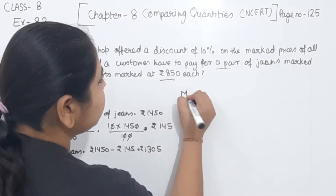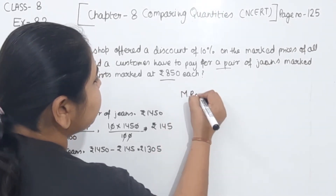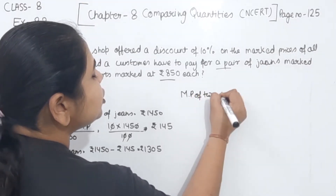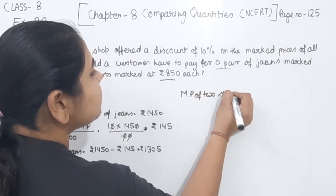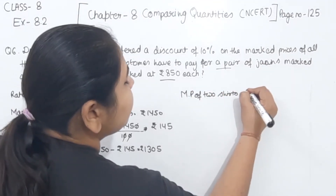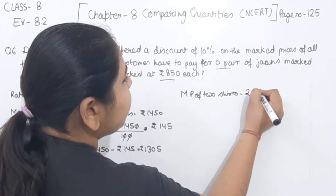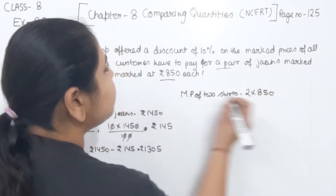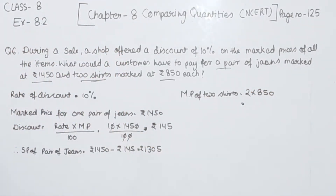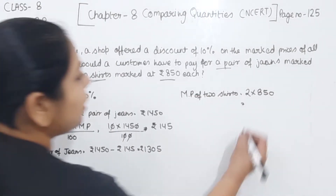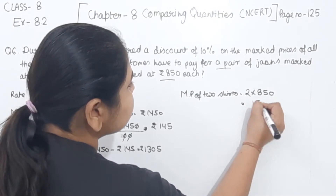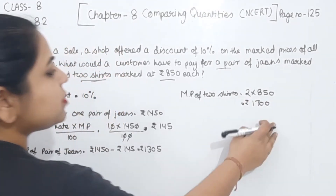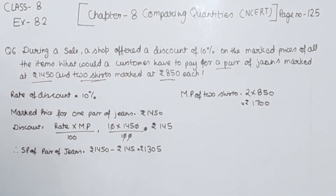Now we find the marked price of 2 shirts. We have 2 multiplied by ₹850, which equals ₹1700. So the marked price of 2 shirts is ₹1700.